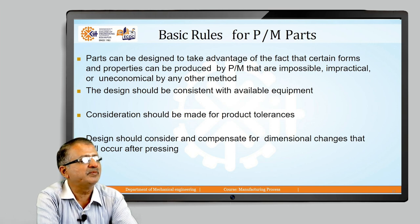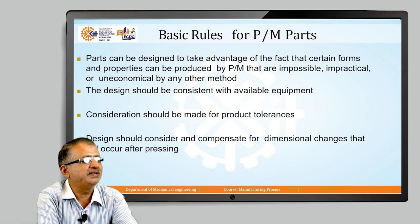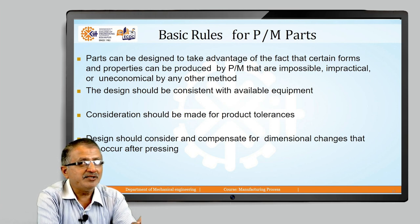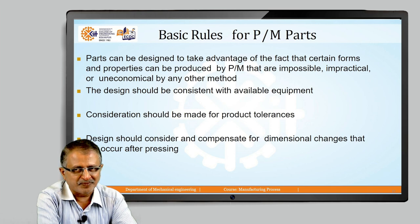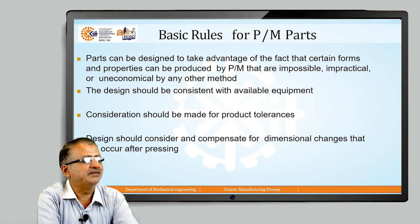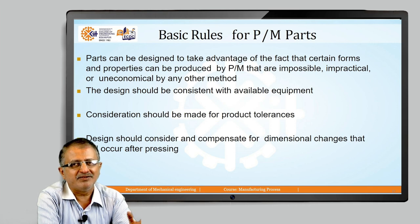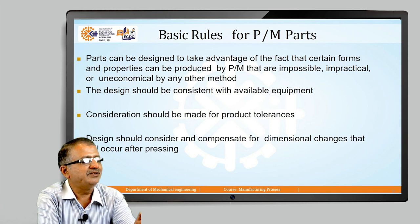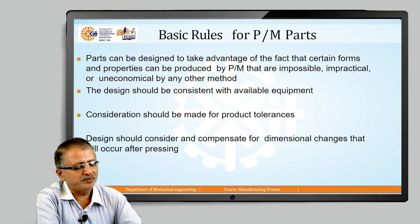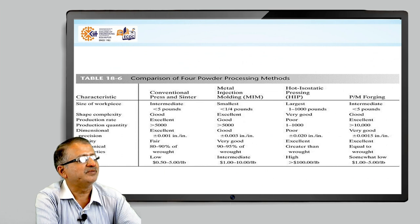The design should be consistent with the available equipment — equipment selection plays a crucial role in product tolerancing, net shape, cost, and quality. The most important requirement is that the design must compensate for dimensional changes. Allowances should be provided because when pressing is carried out, dimensional changes occur, and the design should consider and compensate for dimensional changes that will occur after pressing.